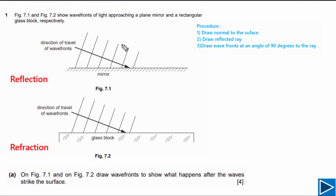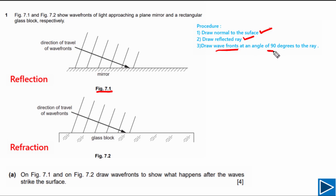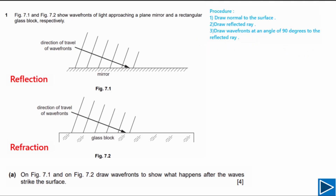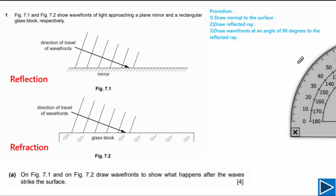First, let's draw the reflected wave fronts on figure 7.1. To do this, we follow these steps: step one, draw the normal to the surface; step two, draw the reflected ray; and step three, draw wave fronts at an angle of 90 degrees to the reflected ray. Now let's do step one — draw the normal to the surface.